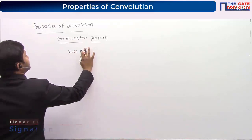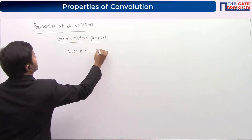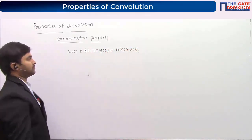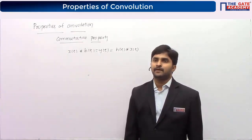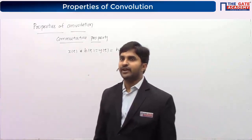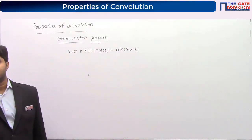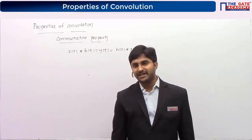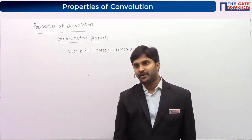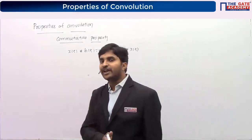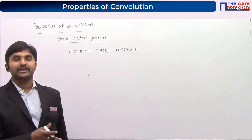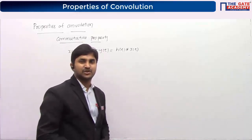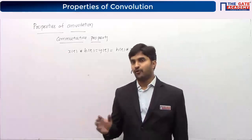Commutative property: x(t) convolved with h(t) equals y(t), which is also equal to h(t) convolved with x(t). Important note: if you have to find y(t) which is x(at) convolved with h(t) — where only one function is scaled — then you must use the direct method. The time scaling property only helps when both x and h are scaled with the same parameter a.